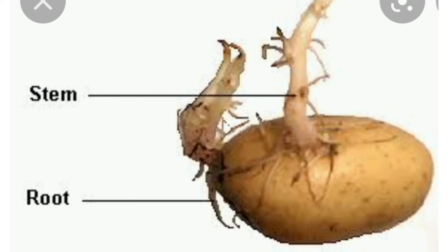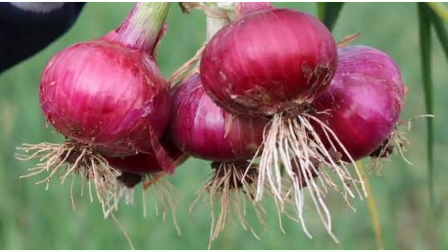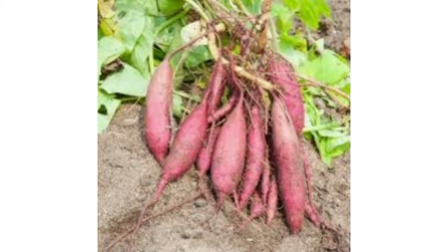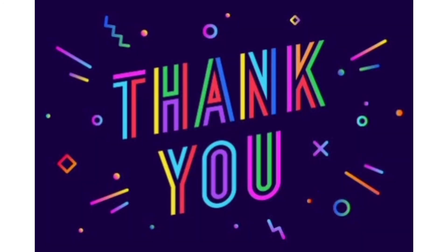Tiny buds develop on the potato in a certain season. These buds, if put into suitable soil, develop into new plants. Last, plants from leaves. Bryophyllum and sweet potato are plants which can be developed from leaves. Thank you, have a nice day.